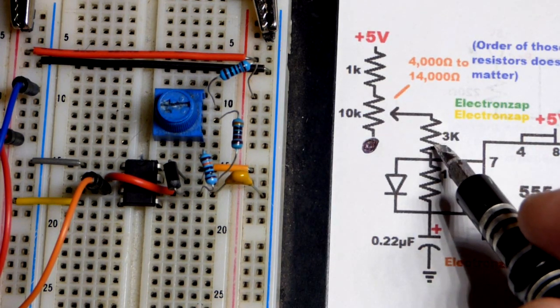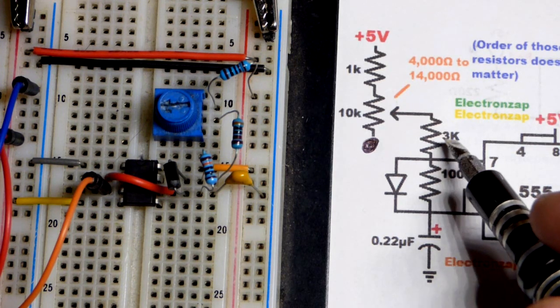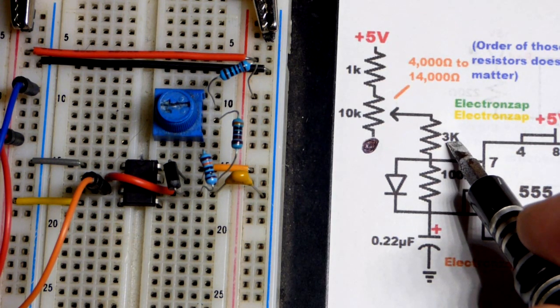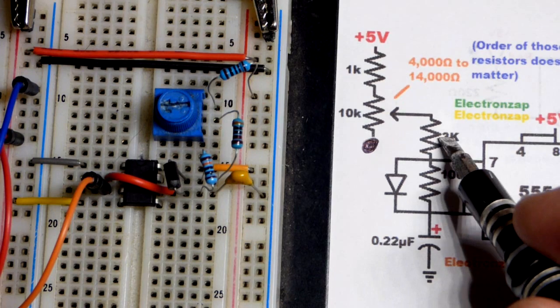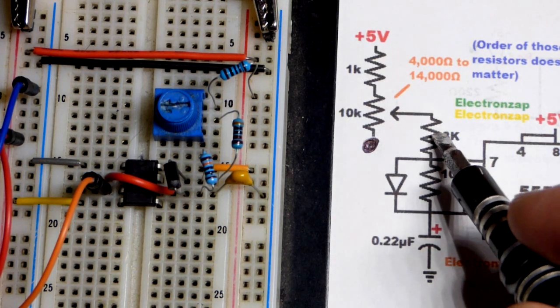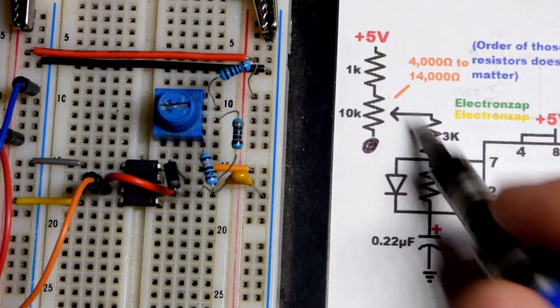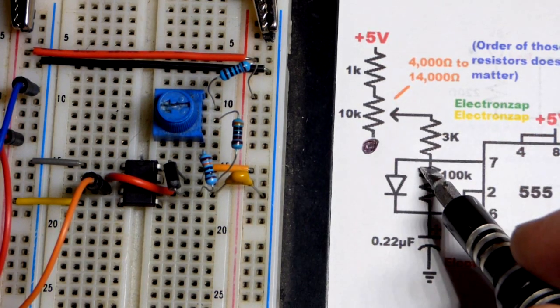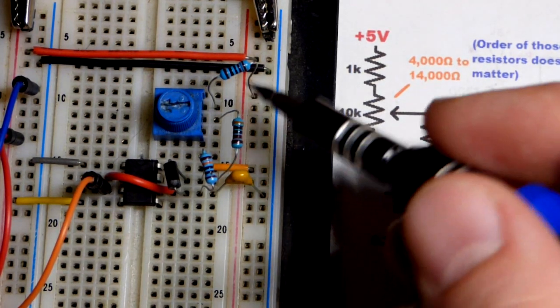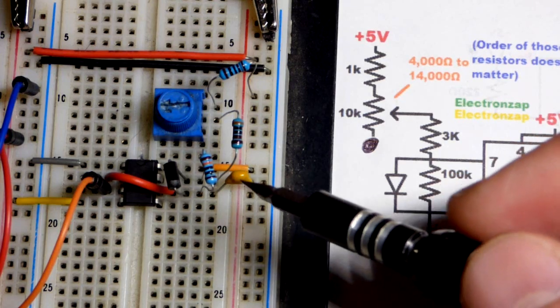I don't have a 4,000 ohm resistor. I have 3,000 and then the next one is 4,700, so I just took a 3 and a 1 and they're in series for a total of 4,000 ohms plus we can add 10,000 more.